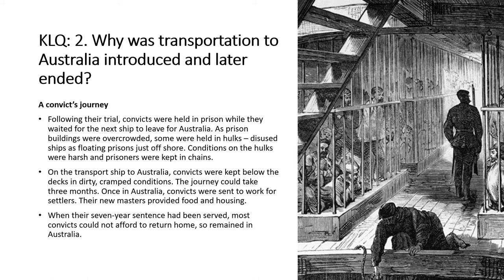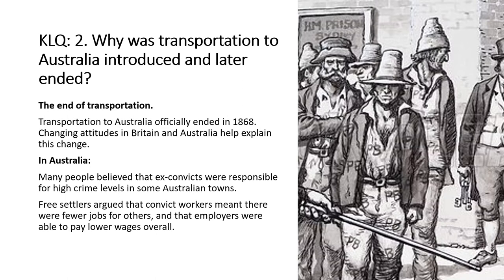On the transport ship to Australia, convicts were kept below deck in very dirty and cramped conditions. The journey could take as much as three months. Once in Australia, convicts were sent to work for settlers, whose new masters provided food and housing. When the seven-year sentence had been served, most convicts could not afford the expensive journey to return home, so they remained in Australia and settled there.